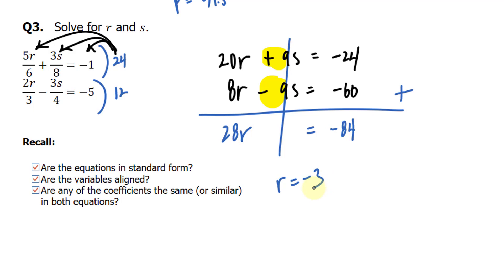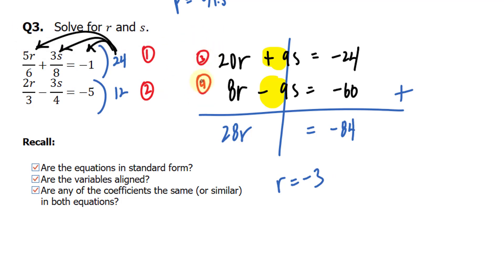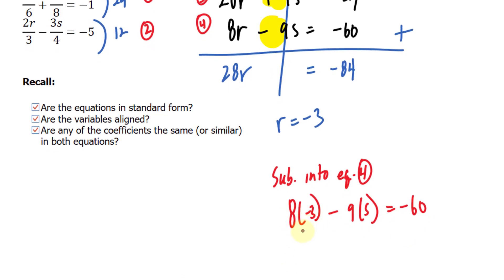We found R, and now we can go ahead and find S. And I would highly recommend not to substitute R into equations 1 and 2, because they are fraction-based, and that usually trips up some students. So use either equations 3 or 4. Let's substitute into equation 4. Sub into equation 4. And we have 8 times negative 3 minus 9 times S is equal to negative 60. 8 times negative 3 is negative 24, which when we bring over, should give us positive 24.